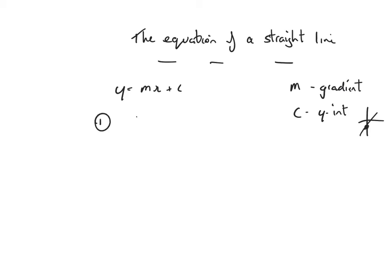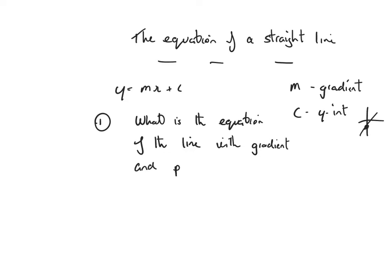Example one: what is the equation of the line with gradient 2 and passing through the point (0, −5)? Make sure you've got that down.